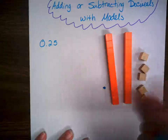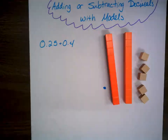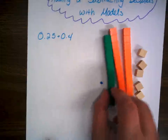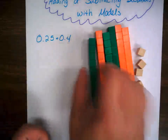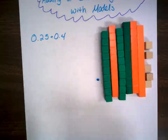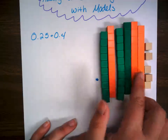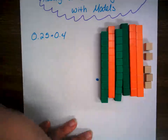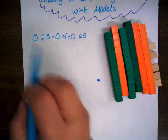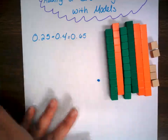Now when I'm adding, I'm just adding more tenths, hundredths, and whole numbers to the model I have. So let's say I want to add 0.4 — four tenths. I'm going to add an additional four tenths. There's my four tenths that I just added, and there's my original. Now I'm combining them and counting my total tenths — I now have six tenths and I still have five hundredths. So when I add these together I get six tenths and five hundredths. So 0.25 plus 0.4 equals 0.65.